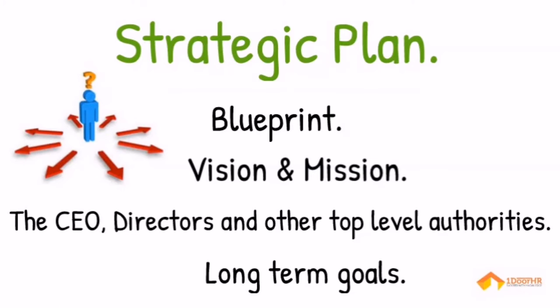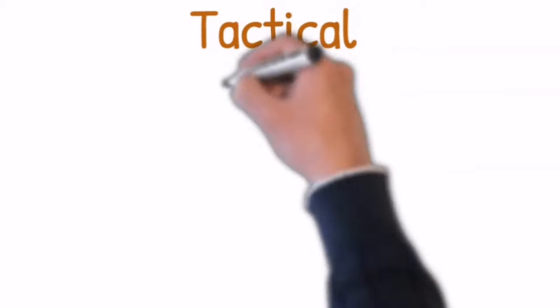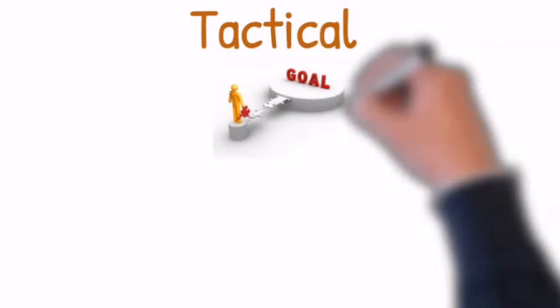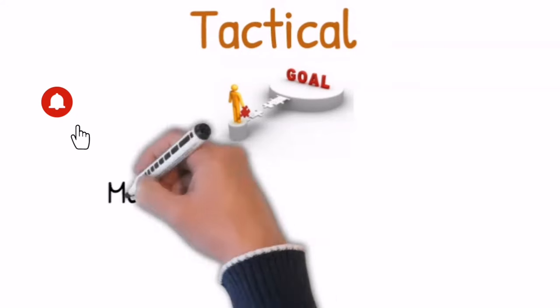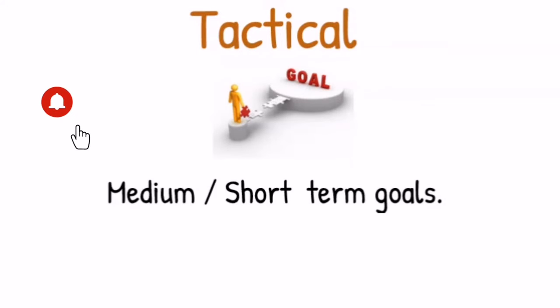Next is tactical. A tactical plan describes the steps and actions that must be taken to achieve the goals from the strategic plan. It is a medium or short-term plan ranging from six months to one year, defined by the middle management.